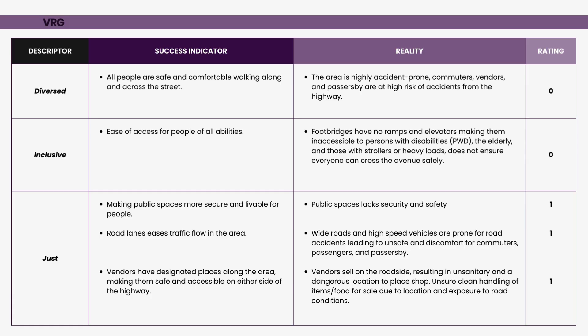We have five descriptors that make up our vision-reality gap matrix. The first is diversity. Diversity is successfully attained when all people are safe and comfortable walking along and across the street — a contrast to the reality of it being a highly accident-prone area for commuters, vendors, and passersby. We rated diversity a zero, meaning nothing has been achieved.